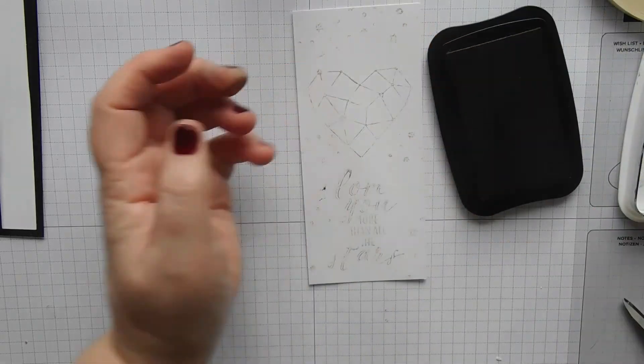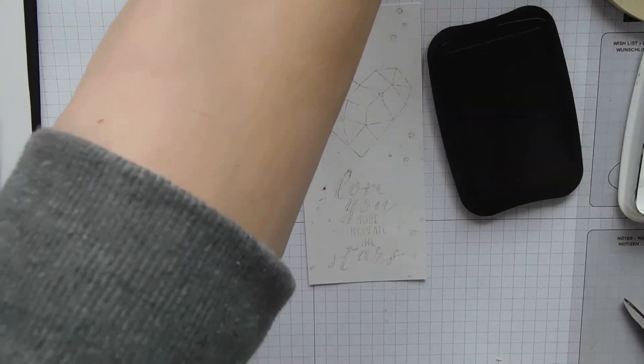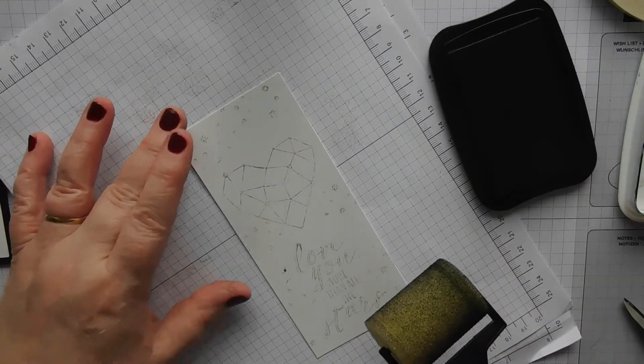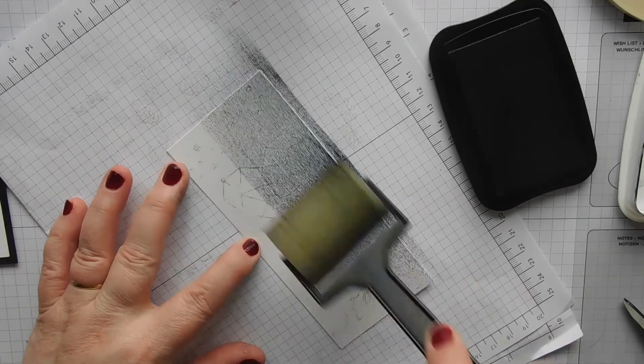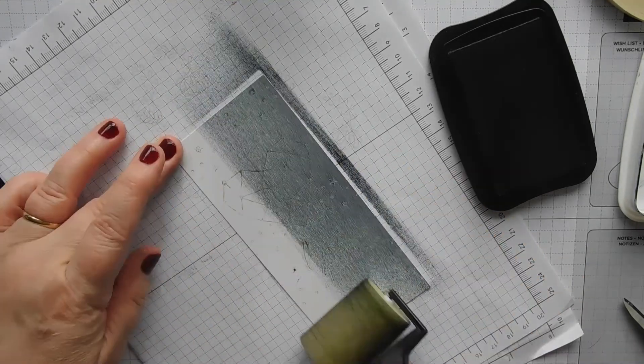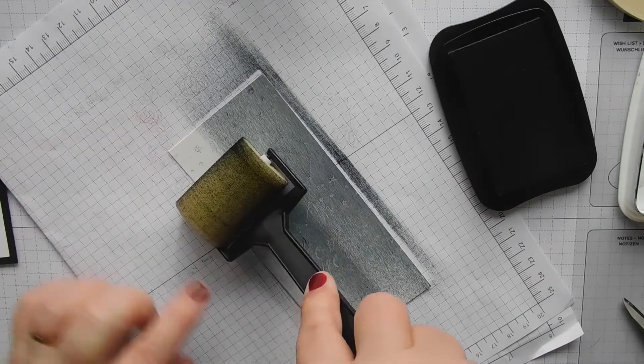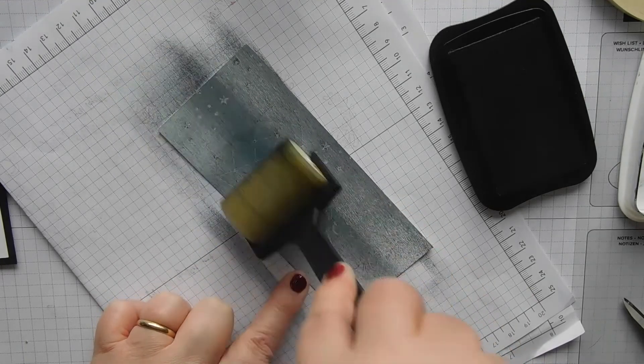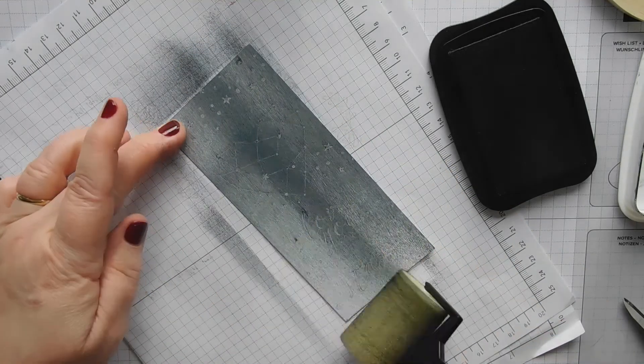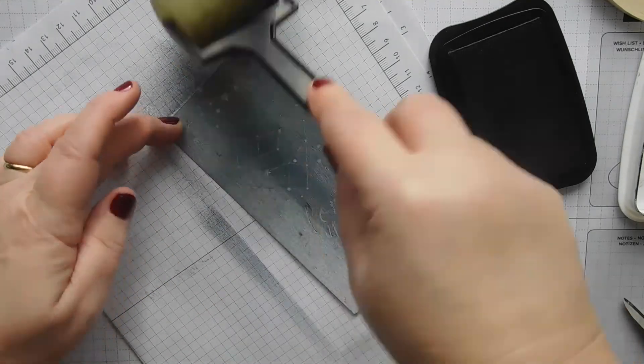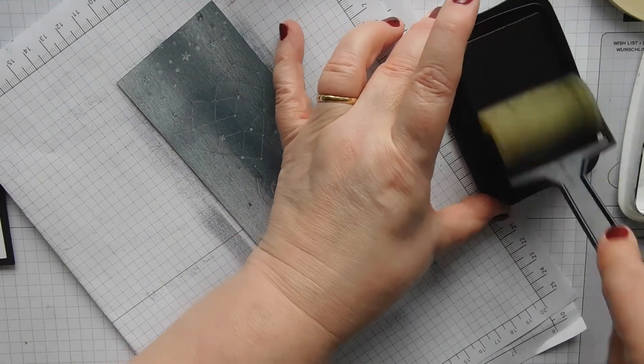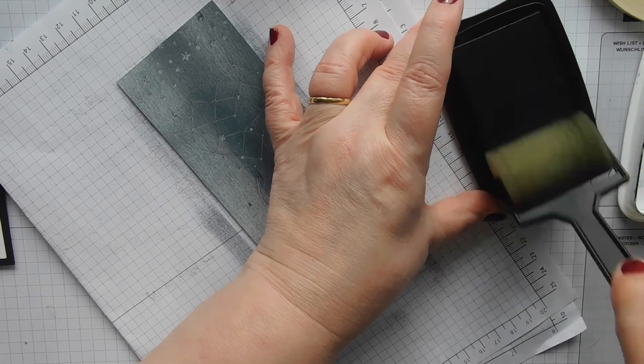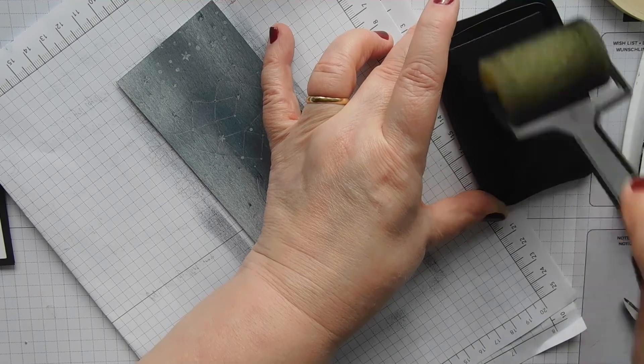There we go. And then I'm going to put it on a scrap piece of paper and then I'm just going to go up. And then what you need to do is just do it several times. As you can see, it's starting to show through. This is where I'm going to get black ink everywhere.